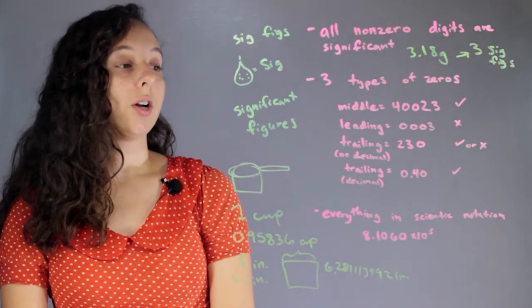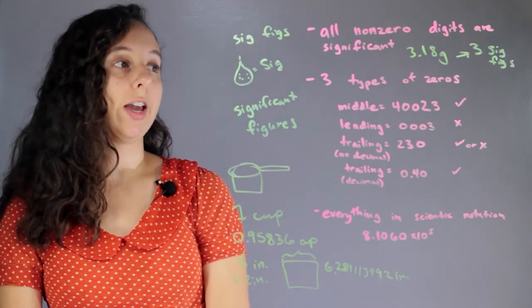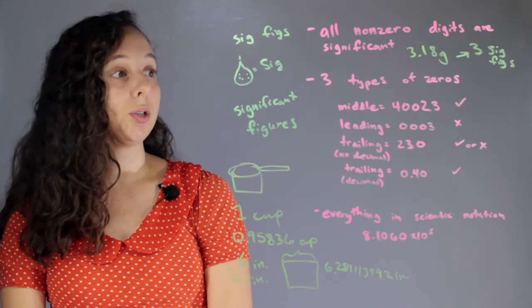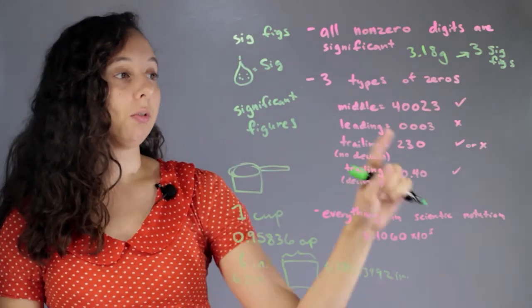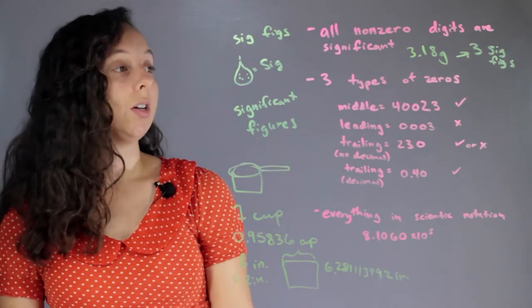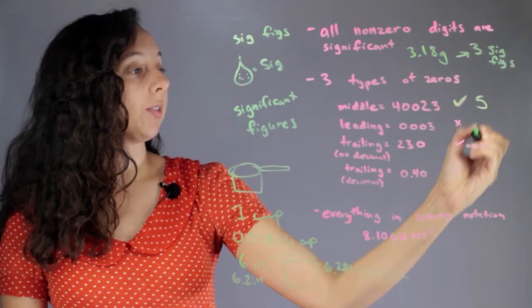And now the really tricky part with sig figs is the zeros. There's 3 or 4 different types of zeros. So one is zeros that are right in the middle of a number. Now these are all significant. So this would have 5 sig figs.